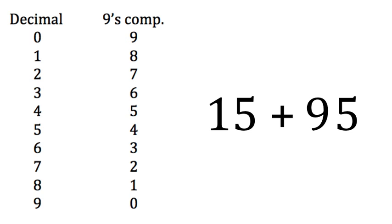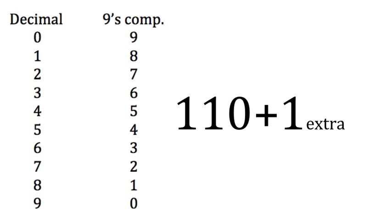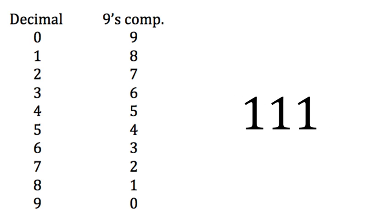So in this case, we get 15 plus 95. This equals 110. But don't forget to add that extra 1. 110 plus the extra 1 is 111. Finally, we ignore the leading term and we get 11.